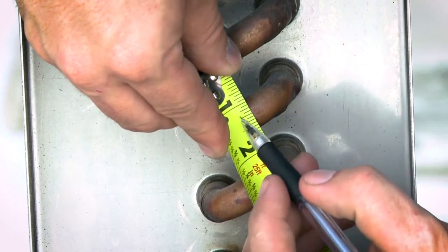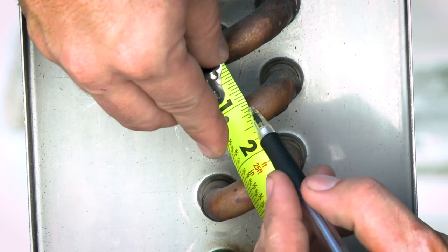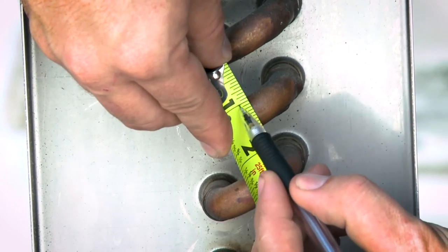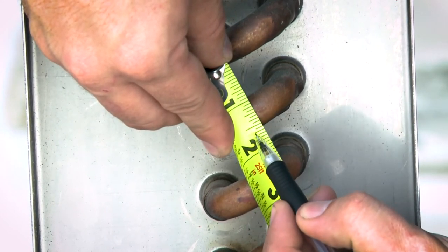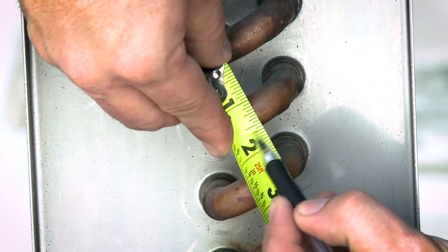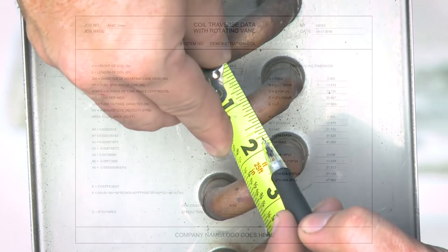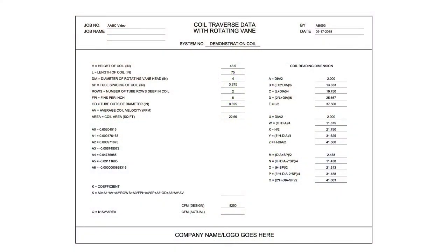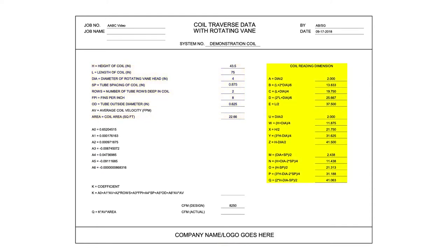Measure the coil's tube outside diameter and verify that the measurement matches the submittal data on the form, which is indicated at 0.625 inches. The recorded and verified values for H, L, DIA, SP, ROWS, FPI, and OD completes the data required to automatically calculate the coil reading dimensions.